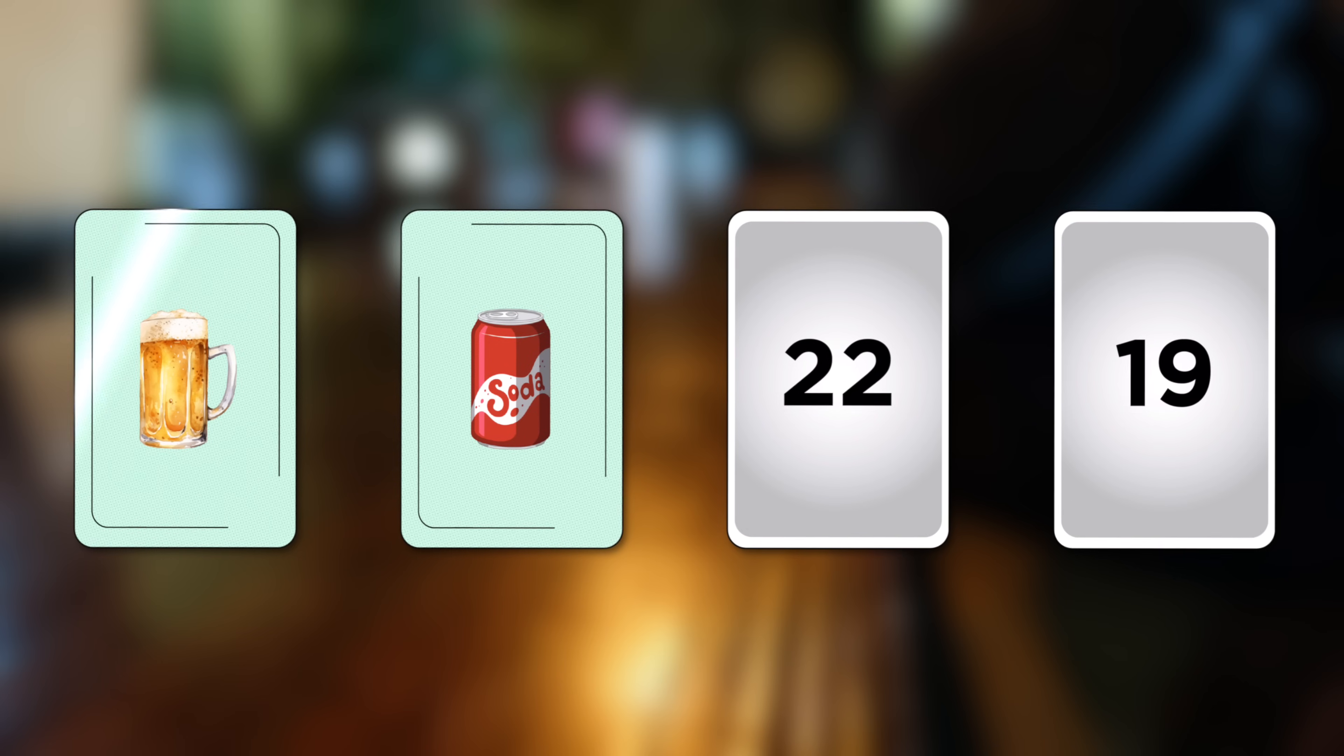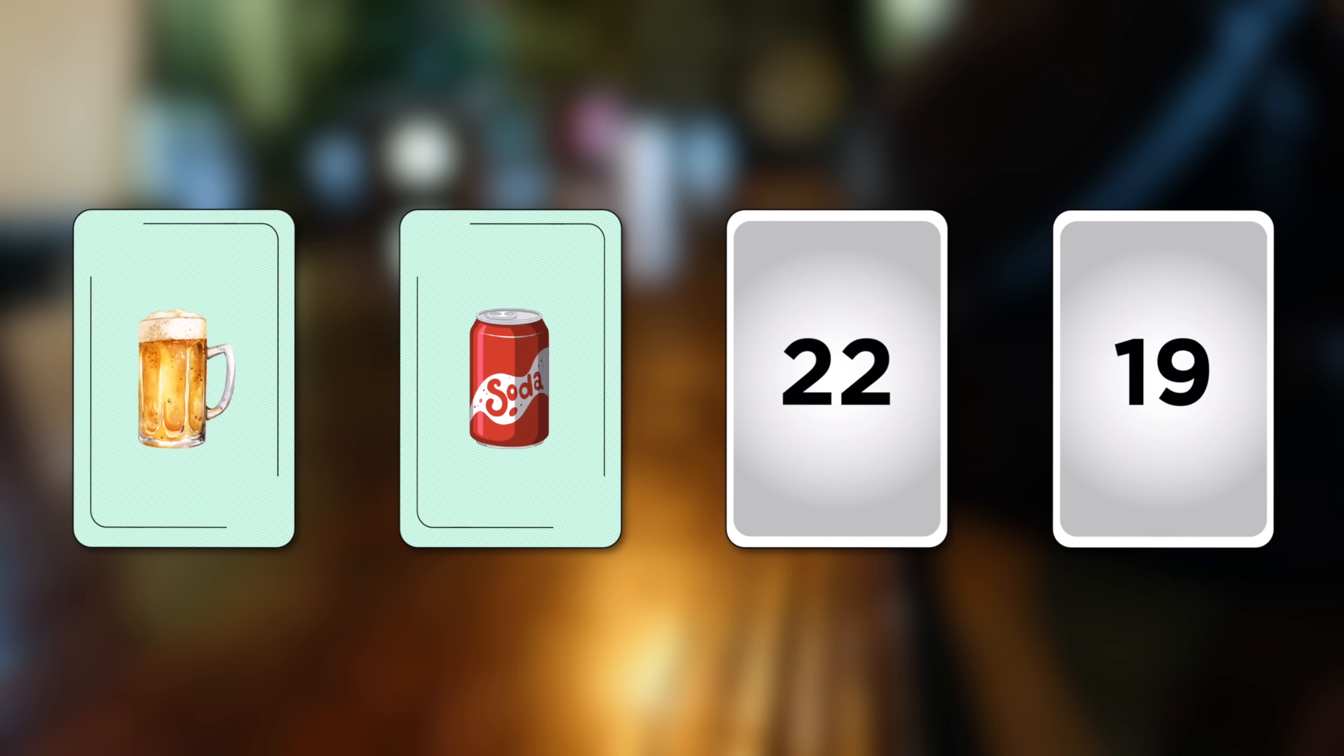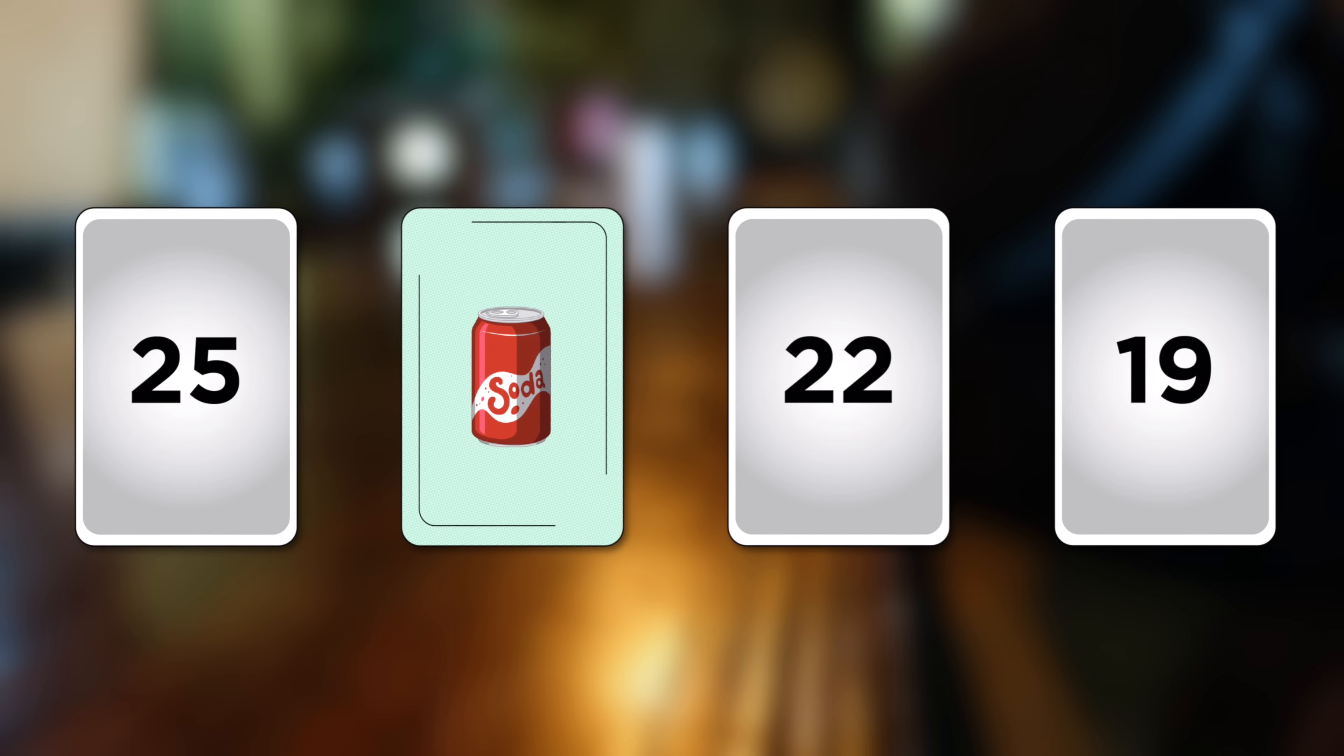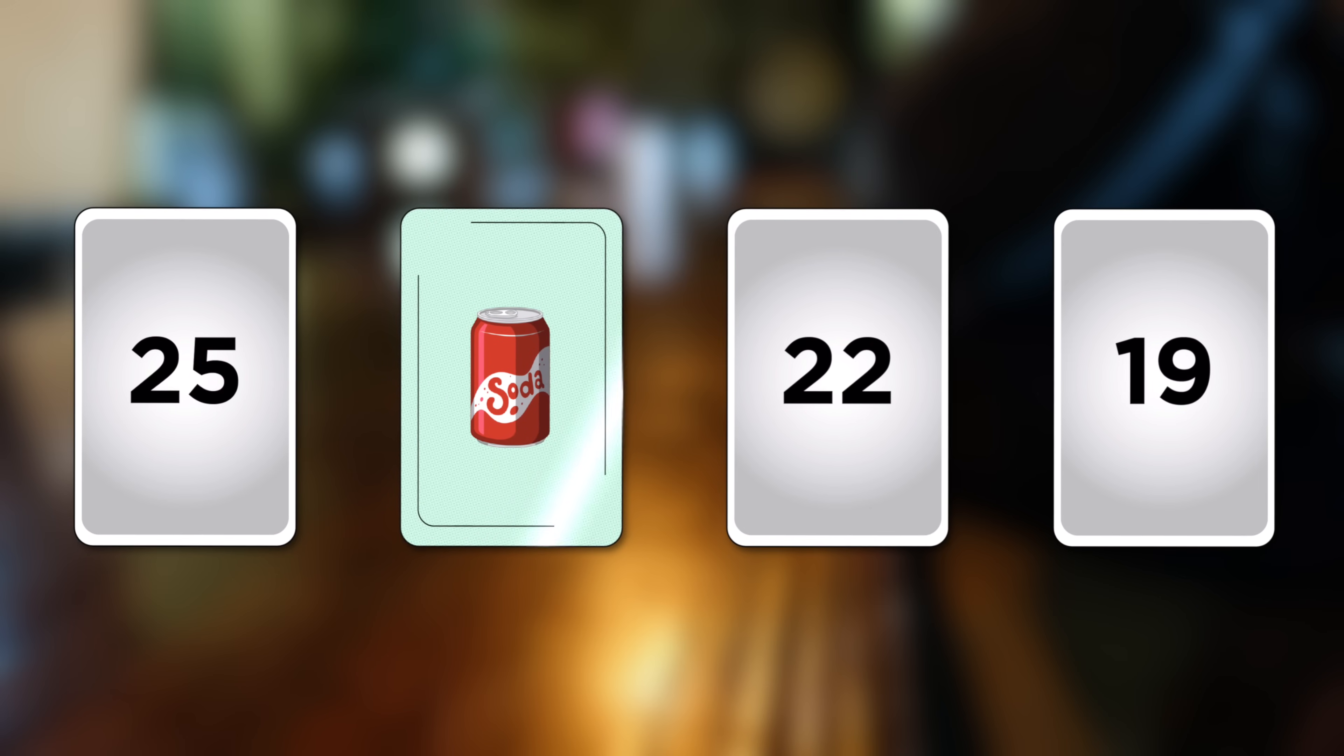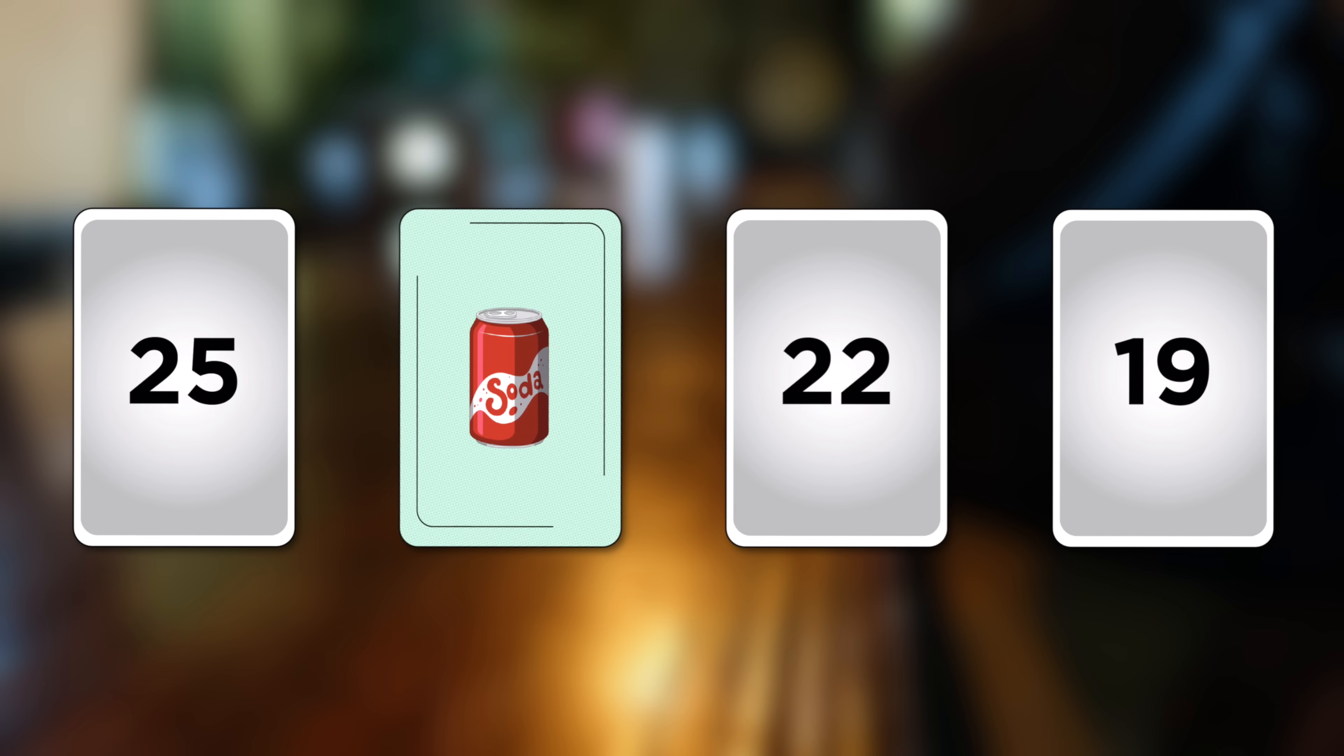Many people instinctively select the card showing the person drinking beer to check if they are of legal drinking age, which is correct. But what about the other cards? Flipping over the card of the person drinking soda doesn't help because there's no law about what age you have to be to drink soda.